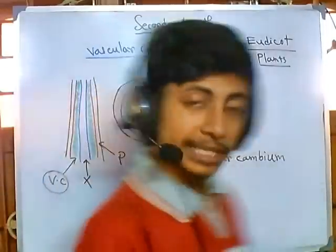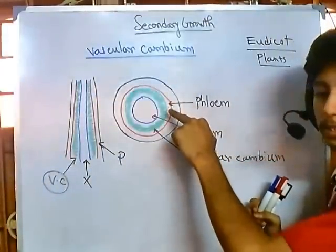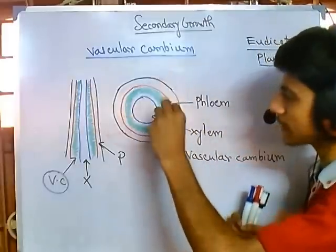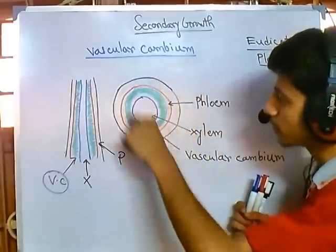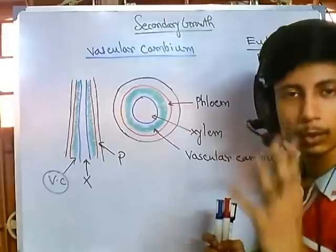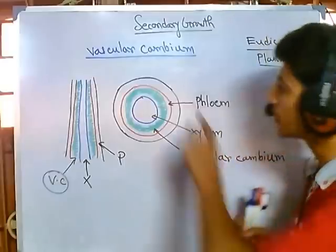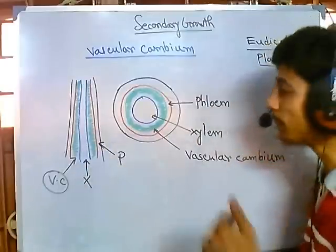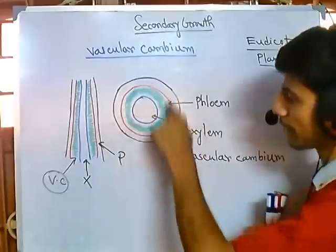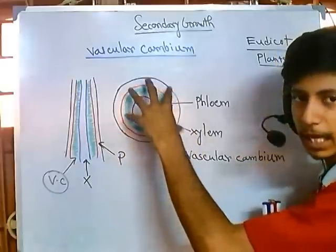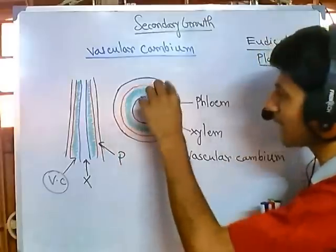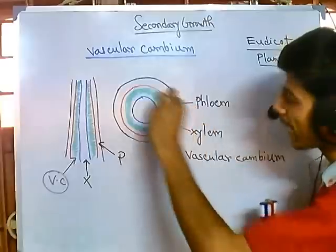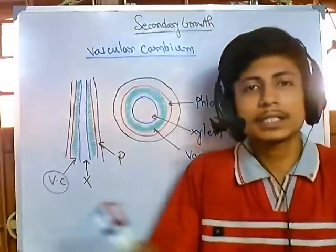For secondary growth to occur, the vascular cambium plays a very vital role. What happens is: these vascular cambium cells are active and can divide. They start to grow and divide by mitosis. This cell division will ultimately increase the area in between the xylem and phloem, and as this vascular cambium area increases, it increases the tree in the side regions.